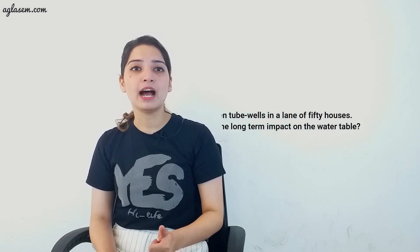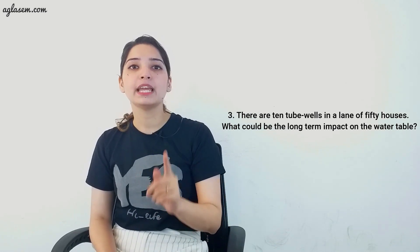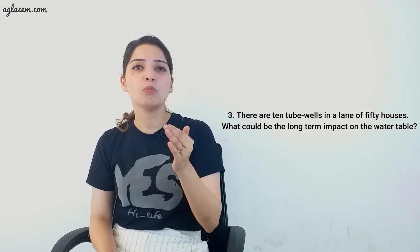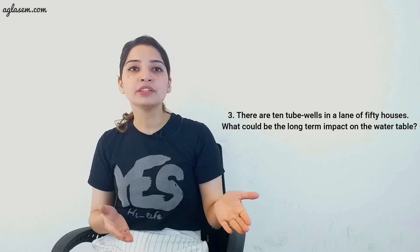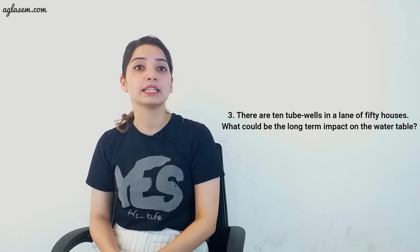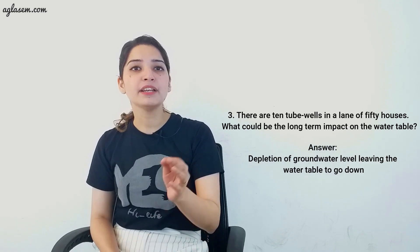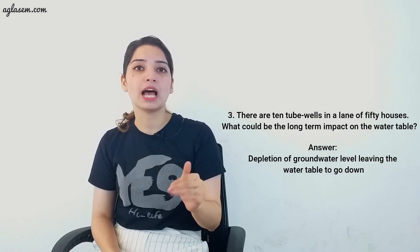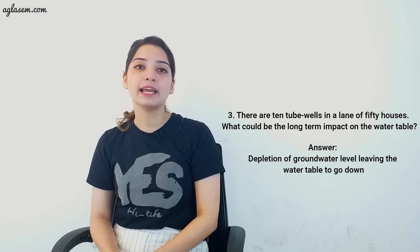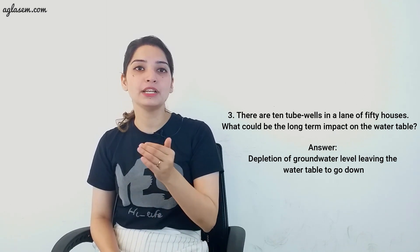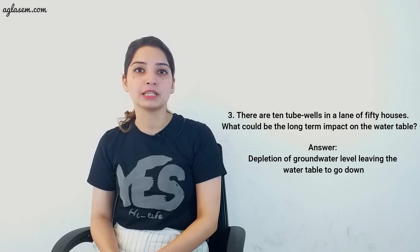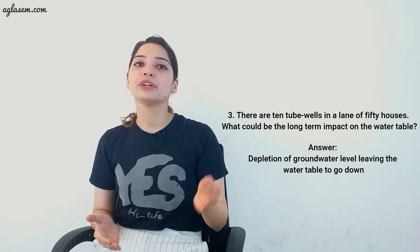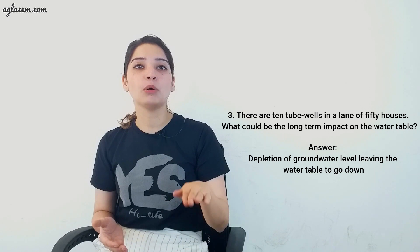Question 3: There are 10 tube wells in a lane of 50 houses — what could be the long-term impact on the water table? If 10 tube wells in a lane of 50 houses are situated, then definitely the groundwater must be getting used for domestic purposes. This would result in depletion of groundwater level, leaving the water table to go down.